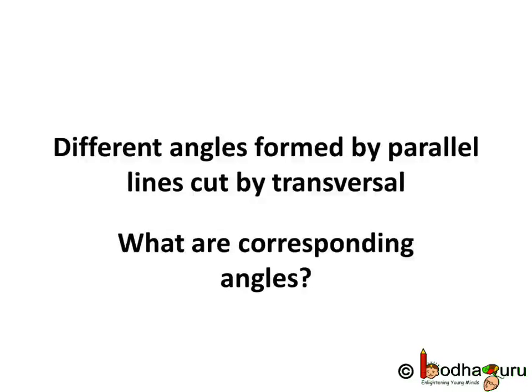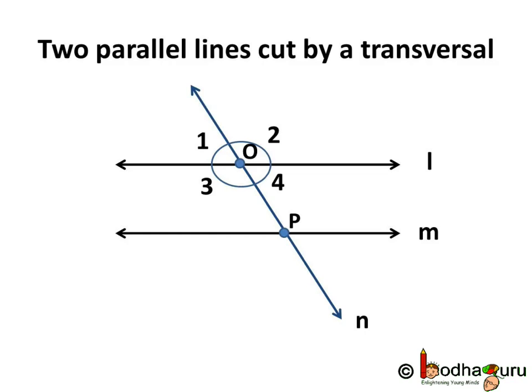Hello children. Now we already know when two parallel lines are cut by a transversal, then four angles are made at each intersection point. Here at point O, four angles are made and let's denote them by angle 1, 2, 3 and 4. Same way, four angles are made at the point P where the transversal N intersects with the line M. Let's denote these angles as 5, 6, 7 and 8.